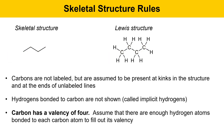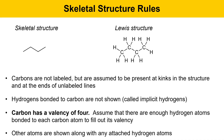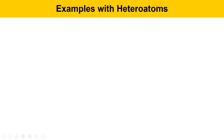The last rule of skeletal structures is that other atoms are drawn in with their atomic symbol along with any attached hydrogens. So it's really carbons and hydrogens that are left out in skeletal structures. We're going to look at examples of skeletal structures with heteroatoms — these are atoms other than carbon, things like oxygen and nitrogen.